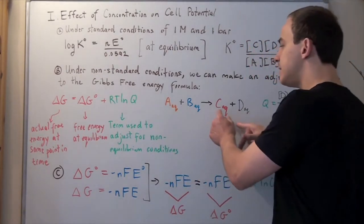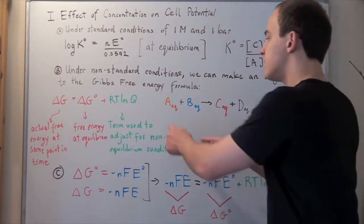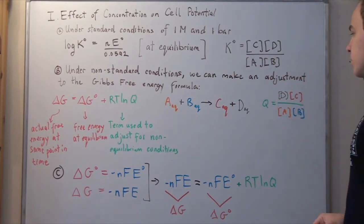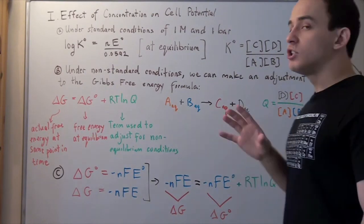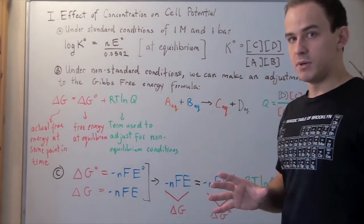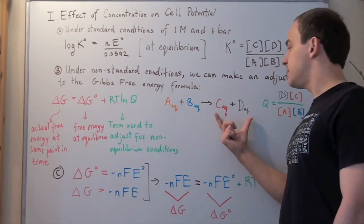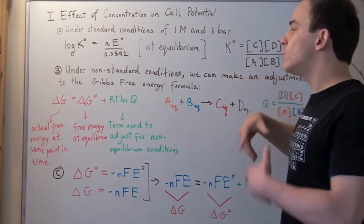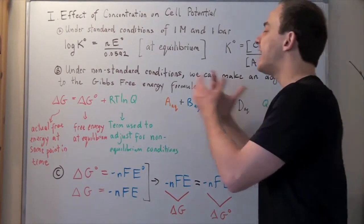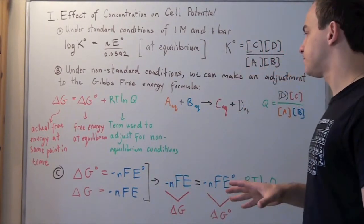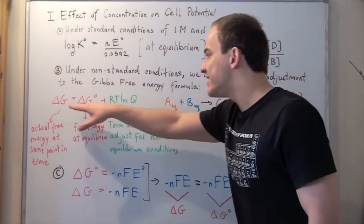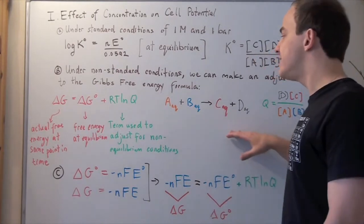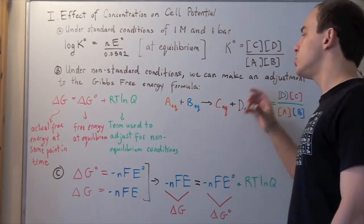Now, what happens when A and B begin reacting to form C and D? The concentration of C and D begins to increase while the concentration of A and B begins to decrease. So the numerator increases and Q becomes larger. According to Le Chatelier's principle, if the concentration of products begins to increase, equilibrium will slowly begin to shift to the left. This equation agrees with that principle.